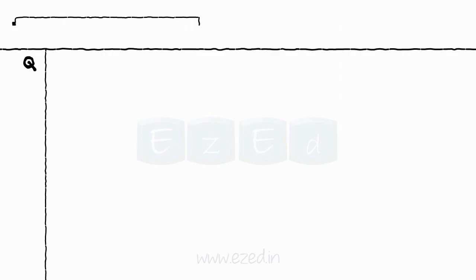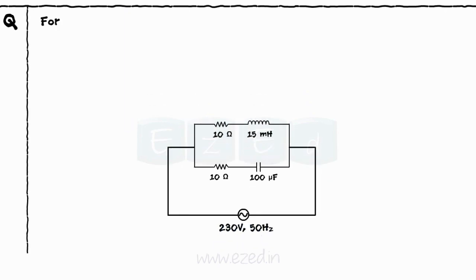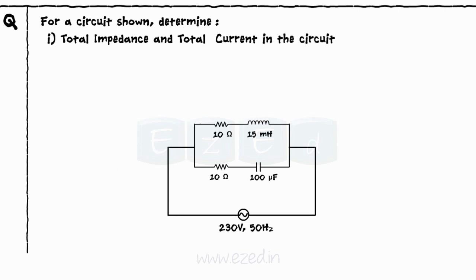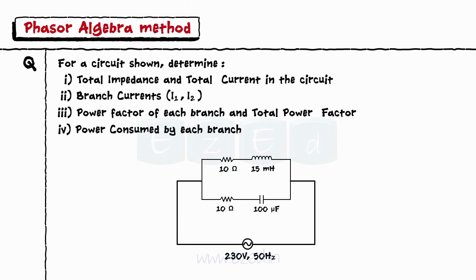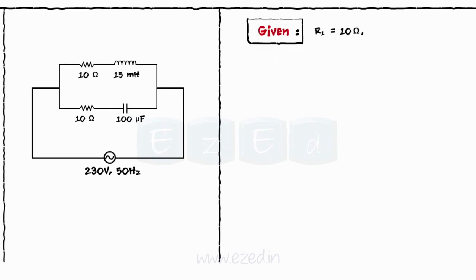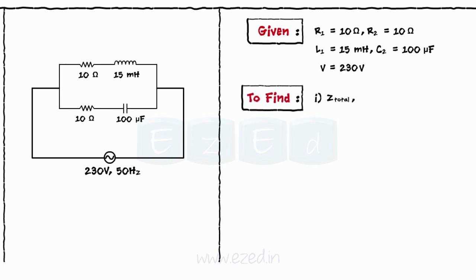Let's take an example to understand the phasor algebra method. For the circuit shown, determine the total impedance and the total current in the circuit, branch currents, the power factor of each branch and total power factor, and power consumed by each branch. We have R1 equals 10 ohms, R2 equals 10 ohms, L1 equals 50 mH, C2 equals 100 microfarads, and V equals 230 volts.